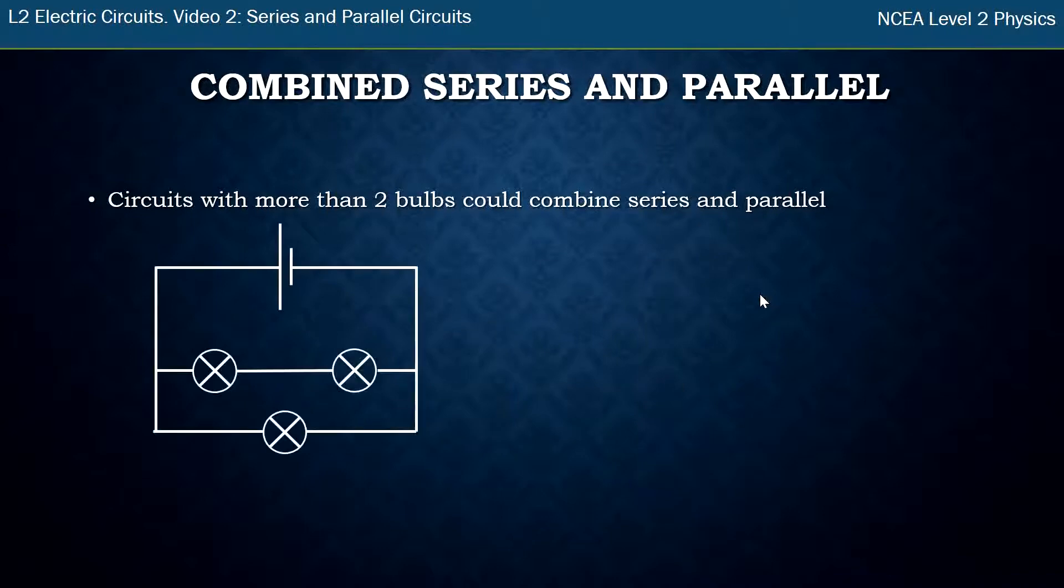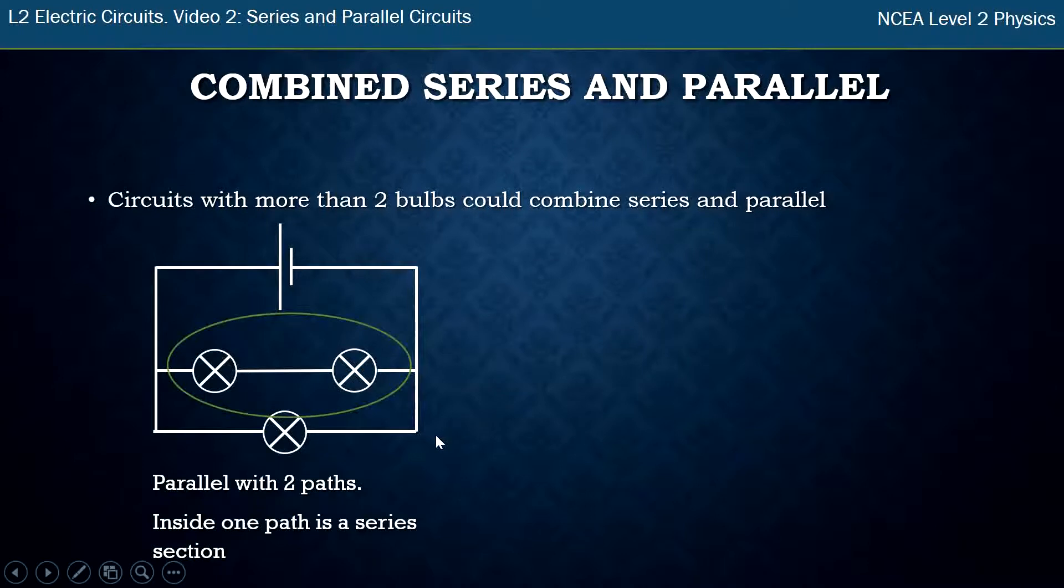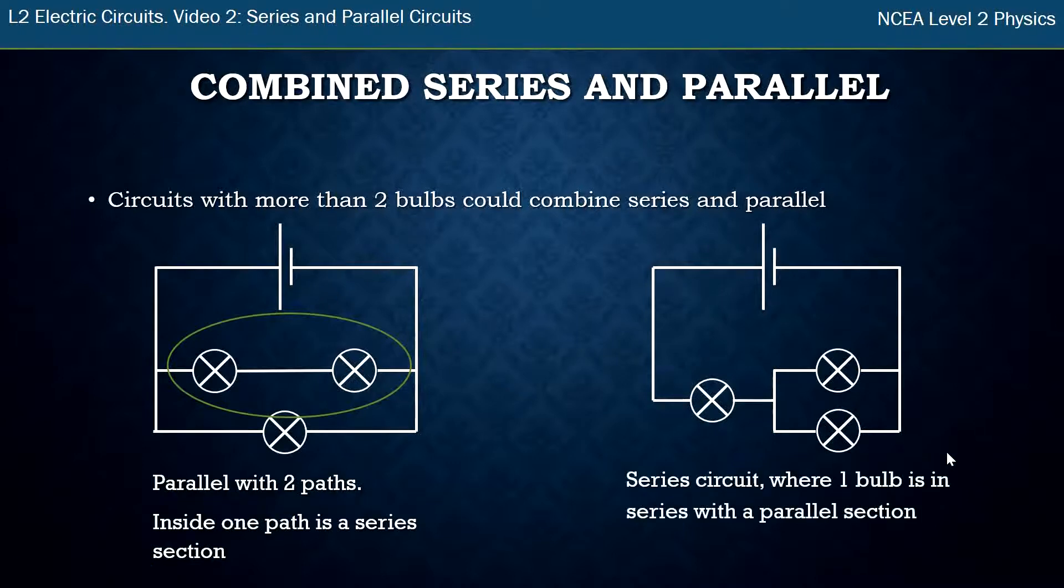There's other combinations we could have as well. We could do three bulbs and in this case there's a parallel because there's two paths. And within one of the paths there is a series section. So within that path there's a series section. So that's a parallel and then inside it is a series. This one here has all the electricity has to go through this one path, this one bulb, and then there's two paths. So there's a parallel section after that. So what we call that is we call that a series circuit where the one bulb on the left is in series with a parallel section. So you can think of this as one big section and this one bulb is in series with that.